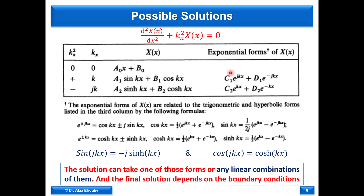The general solution is a linear combination of all possible solutions, each multiplied by a constant. If K squared is positive, the solution involves exponentials of imaginary power — positive or negative — which can be substituted as sine and cosine. These formats are equivalent; you can use either. If K squared is negative, the solution is real exponentials, and the total solution is a linear combination of the two possible forms.